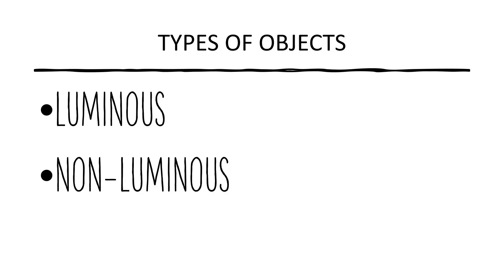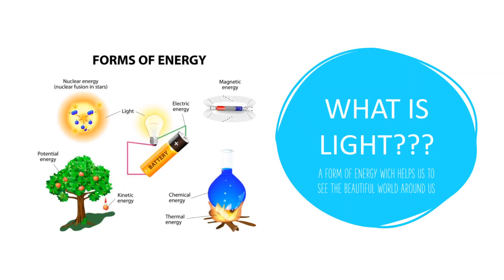A great example is the Sun and the Moon. The Sun is a great big ball of fire that emits light. But the Moon can't emit its own light — it reflects the light that reaches it from the Sun. We are going to talk about these terms: luminous and non-luminous objects.